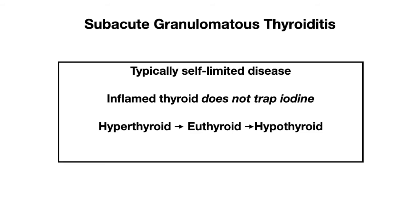It eventually becomes euthyroid as levels level out, and then you get a hypothyroid phase because the thyroid gland is not producing any thyroid hormone. On an uptake scan, you'll see really no uptake of radioactive tracer because the thyroid gland is not producing thyroid hormone — it's releasing the thyroid hormone that's already been formed.